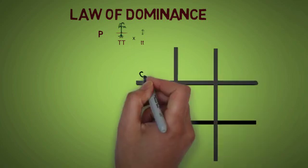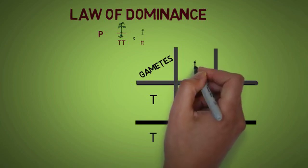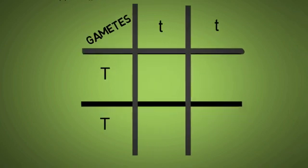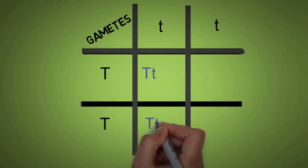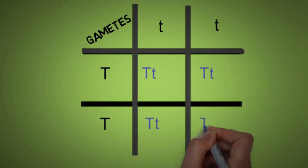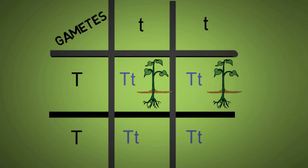Tall produces the gametes capital T and capital T. The dwarf produces the gametes small t and small t, being homozygous, to produce alike gametes. First one F1 generation is capital T and small t. Similarly, in completing, we notice alike F1 and on the external expression we notice all are tall plants.